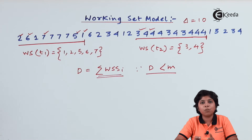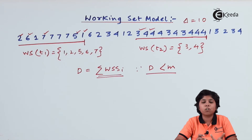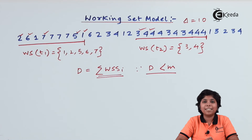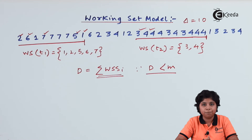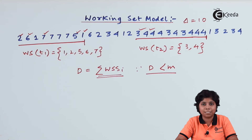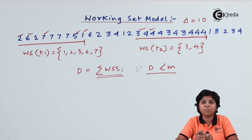Whenever a timer interrupt occurs, the reference bit is reset to zero. If a page is in the active set, one of the bits will be set to one. If the memory bits are set to on, the page is currently in the active set; otherwise, it drops from the active set. Note that this arrangement cannot give an accurate result of exactly where within the 5,000-reference interval the page fault occurred.